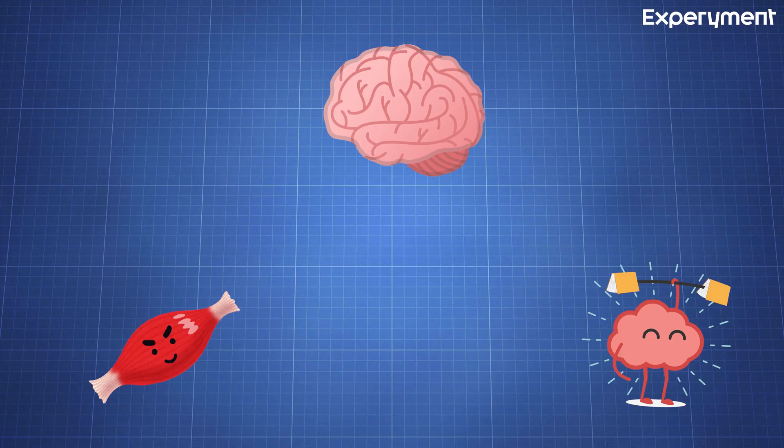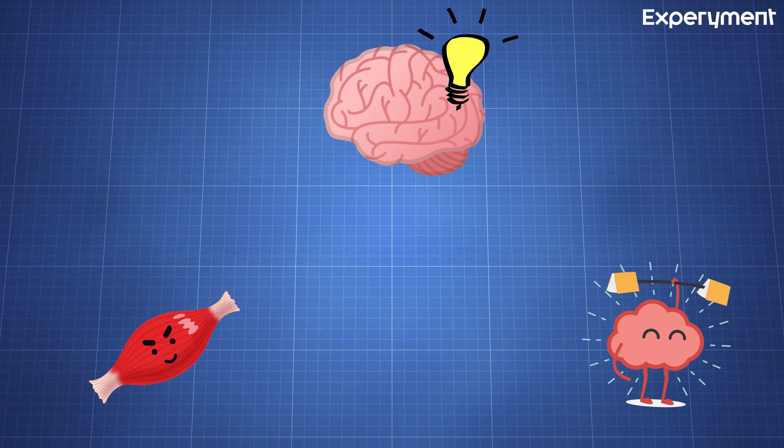But how exactly does the cerebellum affect our movements? Each time we decide to make a movement, a signal is sent from the motor cortex not only to the neurons responsible for the muscle control, but also to the cerebellum, and the cerebellum enhances this signal.